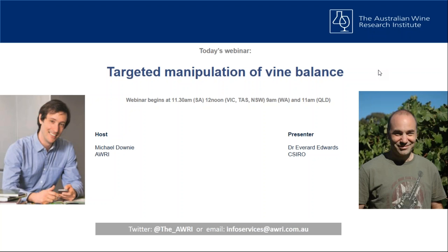Everard started his career in the UK with a Bachelor of Science in Plant Sciences at the University of Sheffield, followed by a PhD at Nottingham Trent University in 1997. He then undertook post-doctoral fellowships at the University of York and the Australian National University. Since 2006 Everard has been applying his experience of whole plant physiology to viticulture at CSIRO, leading projects on wine grape management including investigating the role of vine balance, the long-term impact of deficit irrigation, the role of rootstocks in driving water use efficiency and the interaction between temperature and water status during heatwaves.